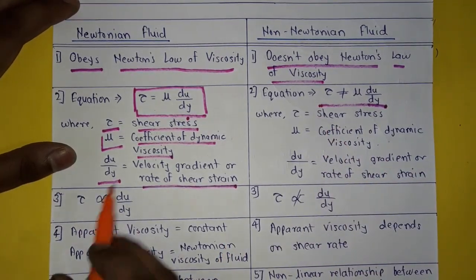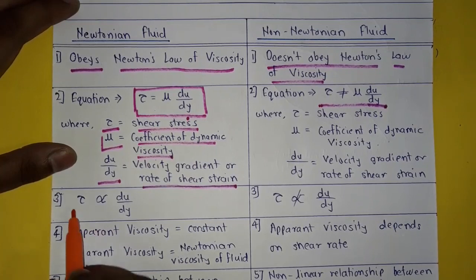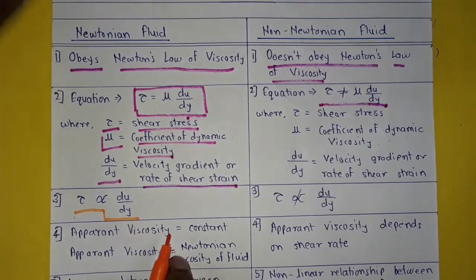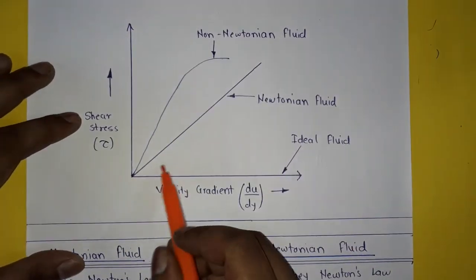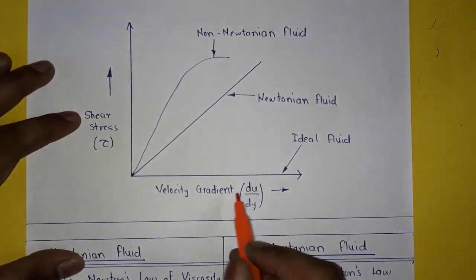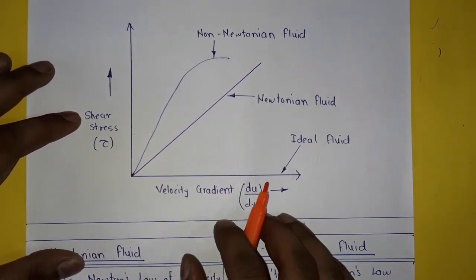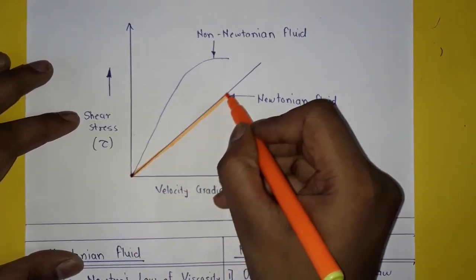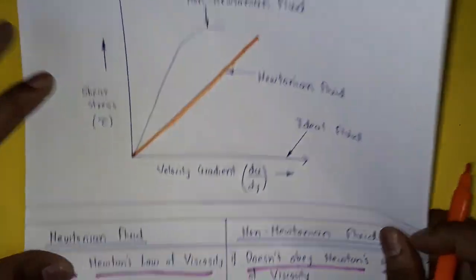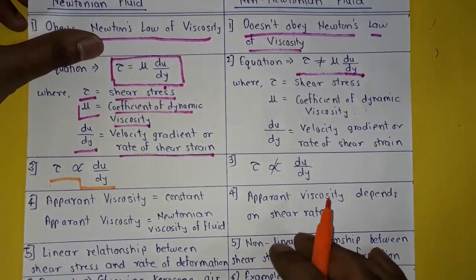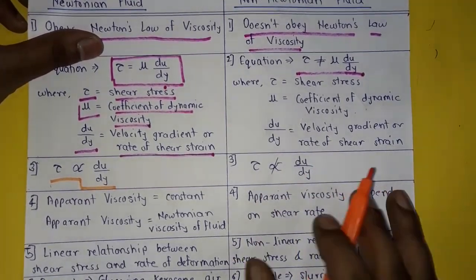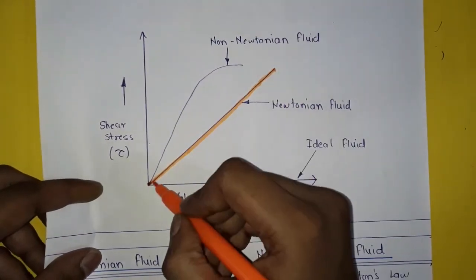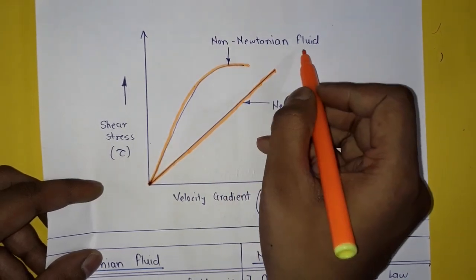In Newtonian fluid, shear stress is directly proportional to velocity gradient, that is du upon dy. See in the graph — because shear stress is directly proportional to velocity gradient, the Newtonian fluid is represented by a straight inclined line. In non-Newtonian fluid, the shear stress is not directly proportional to the velocity gradient, so it is represented on the graph as a curve.